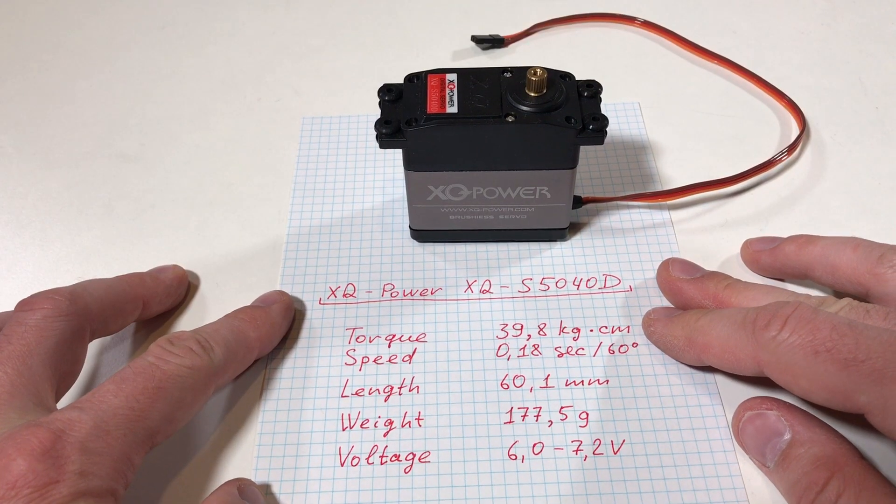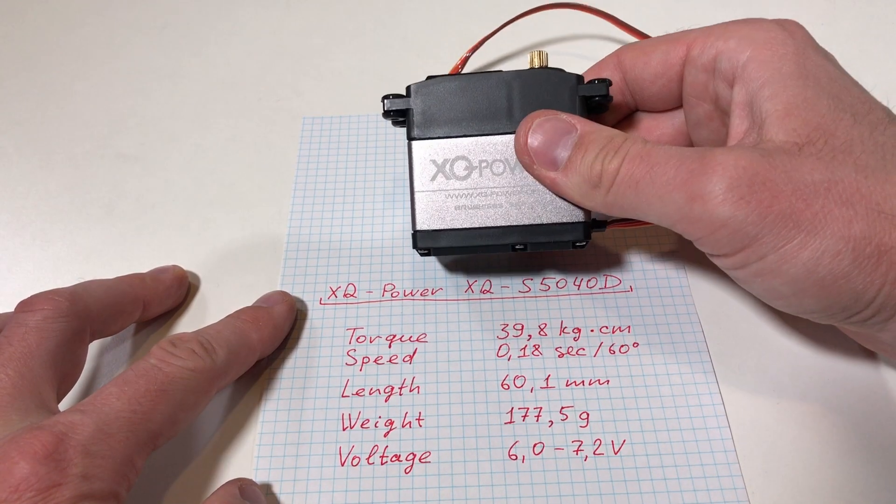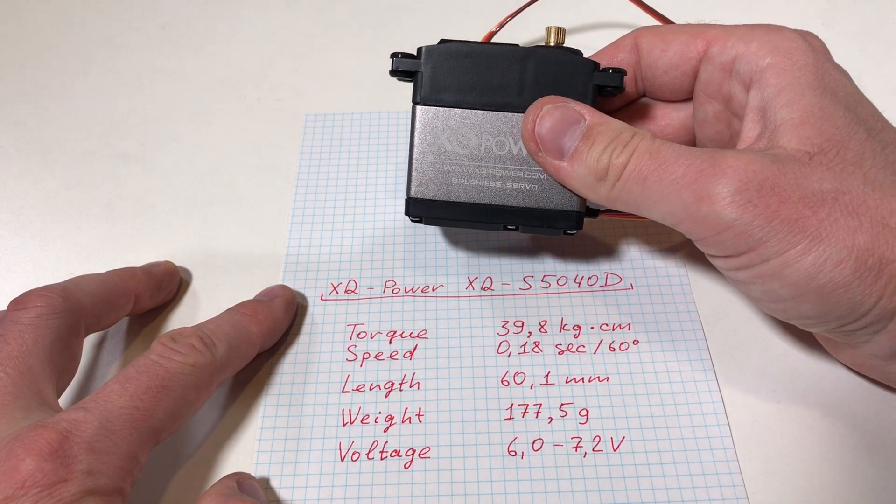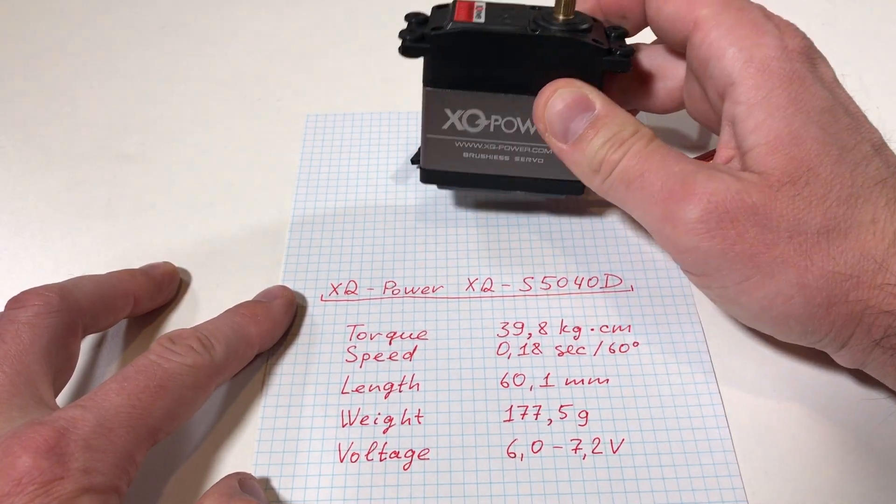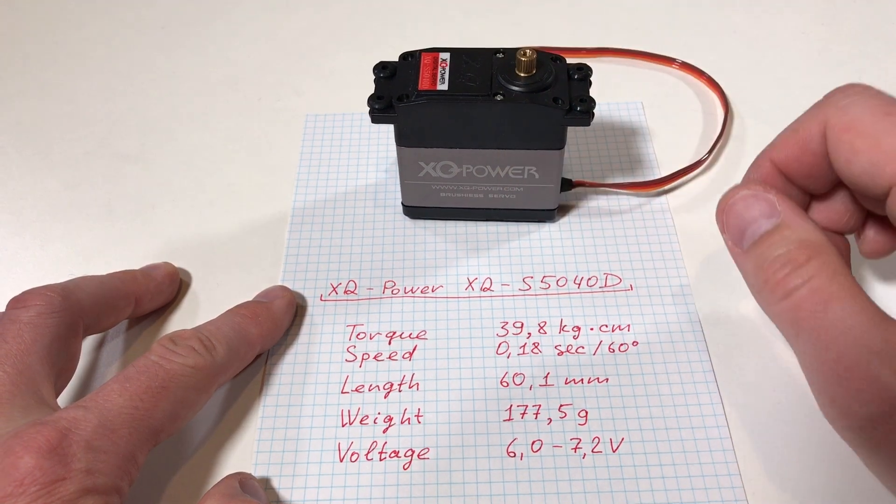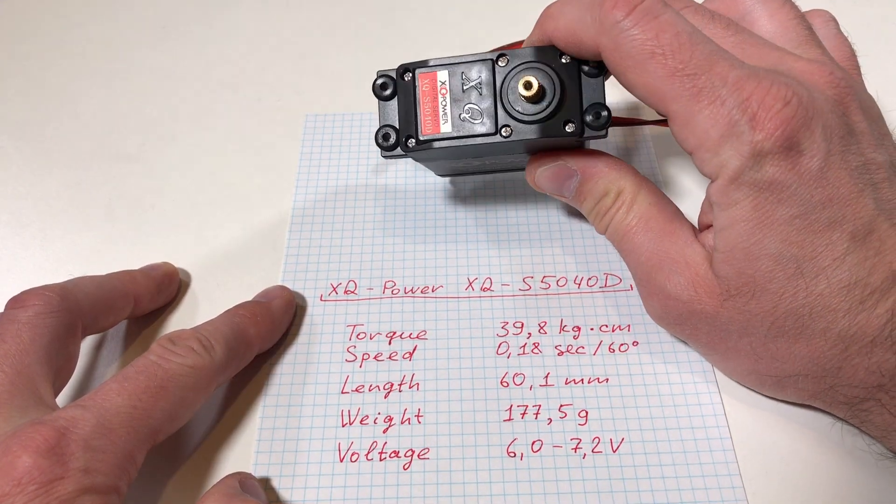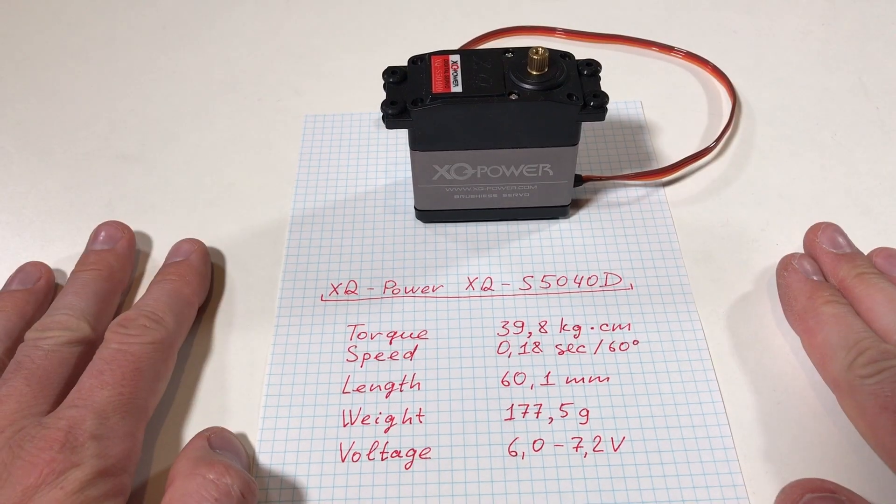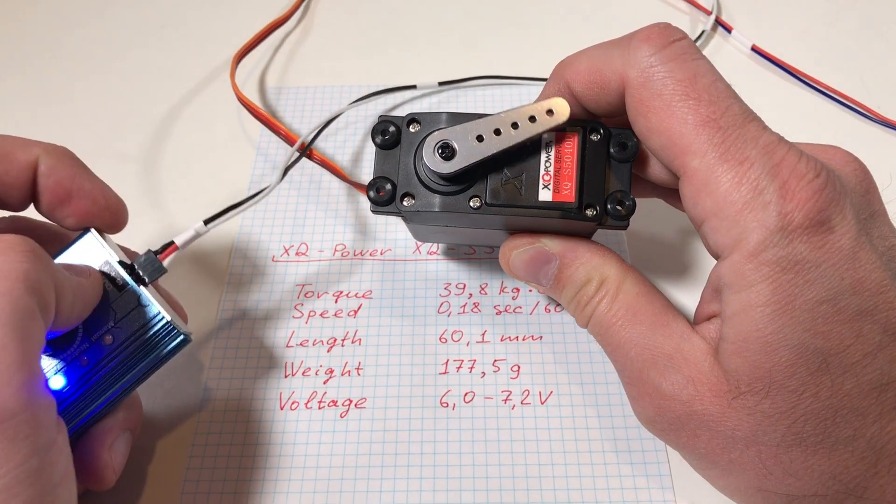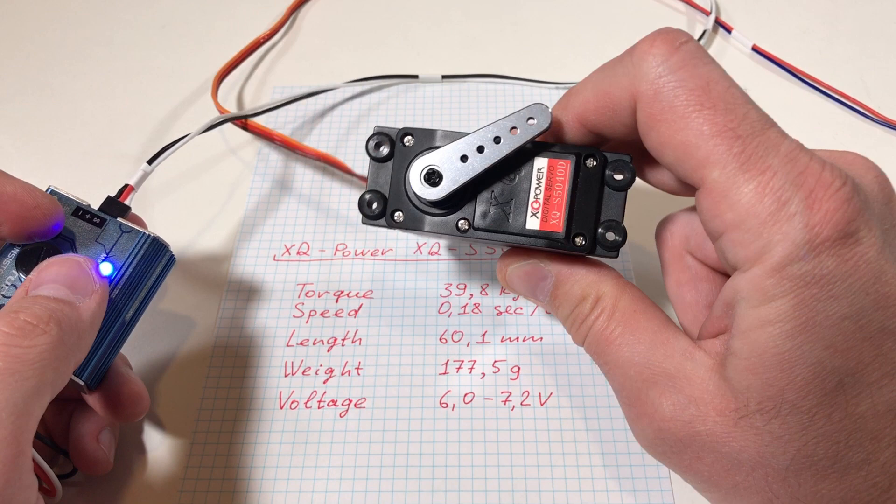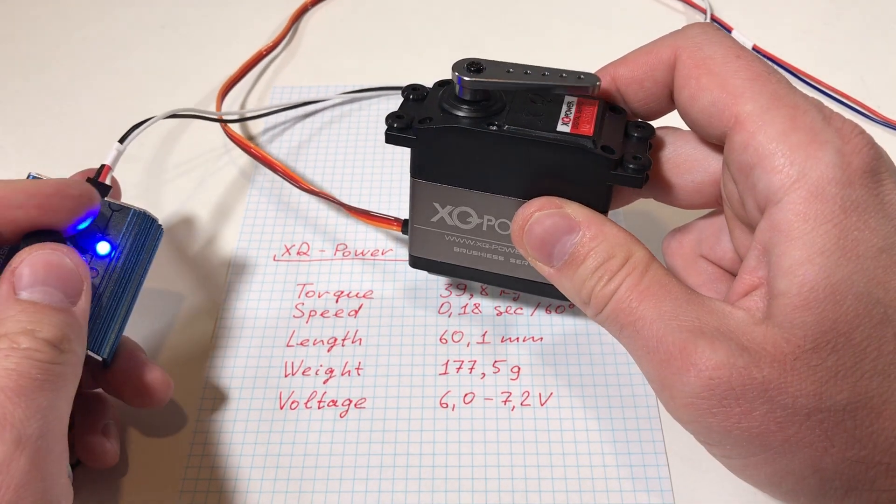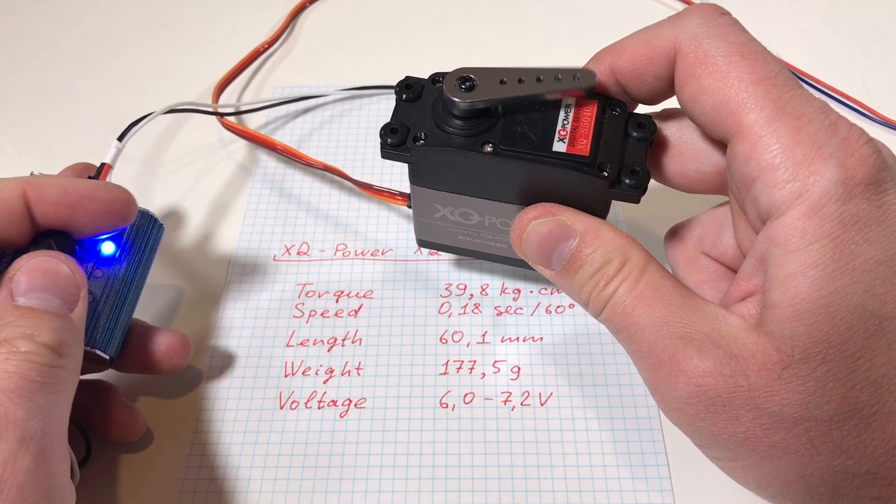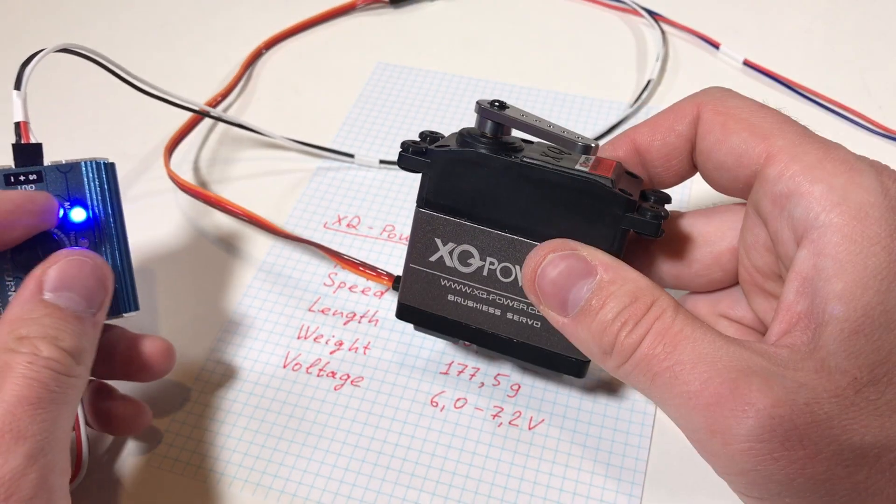This is another big servo motor. It's quite heavy, it has quite significant torque, almost 40 kilogram per centimeter. It should be quite fast and it's super well built. Let's connect it. Now you can see how it works. Really good servo.